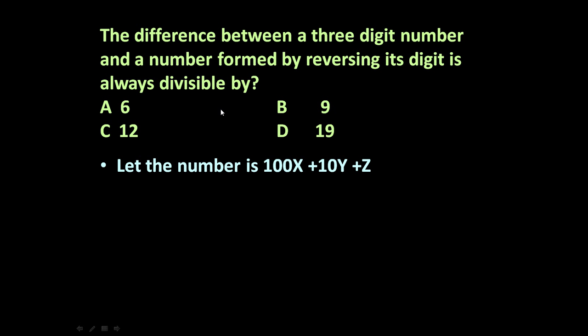Let us assume the three-digit number is 100X + 10Y + Z. Z is at the unit place, Y is at the 10th place, and X is at the 100th place.